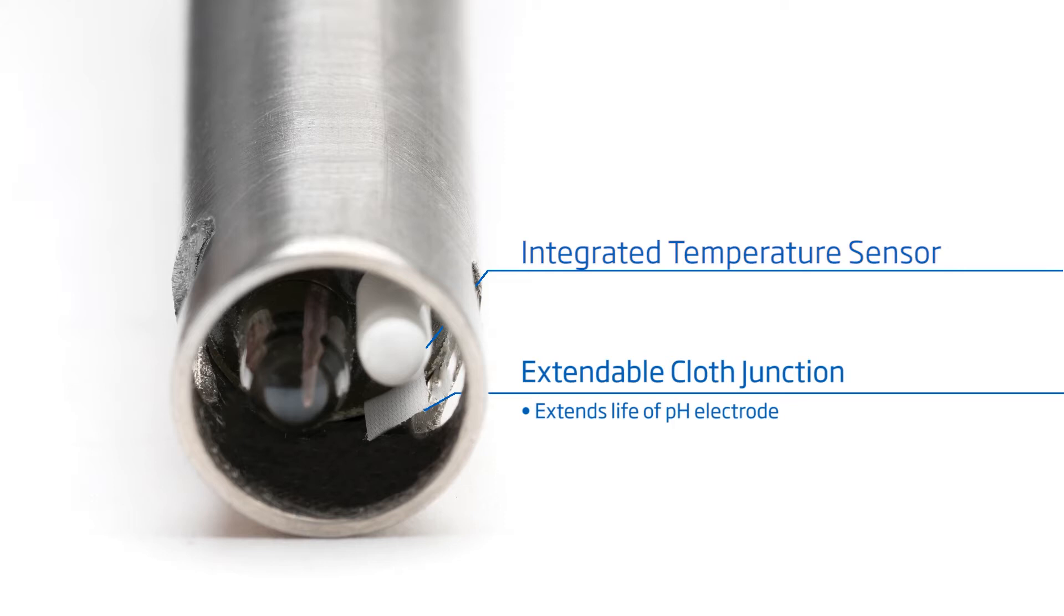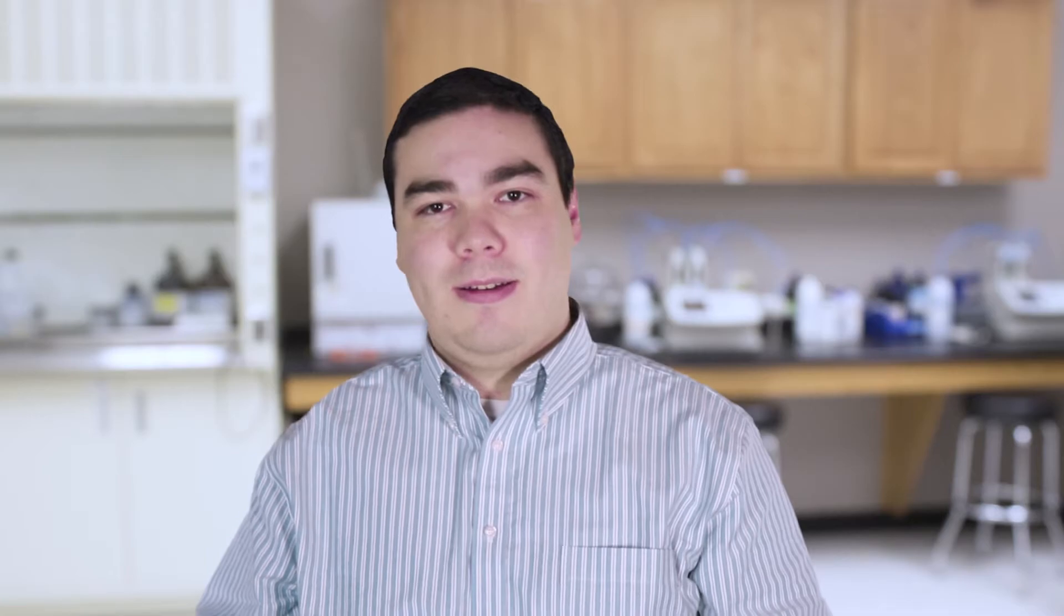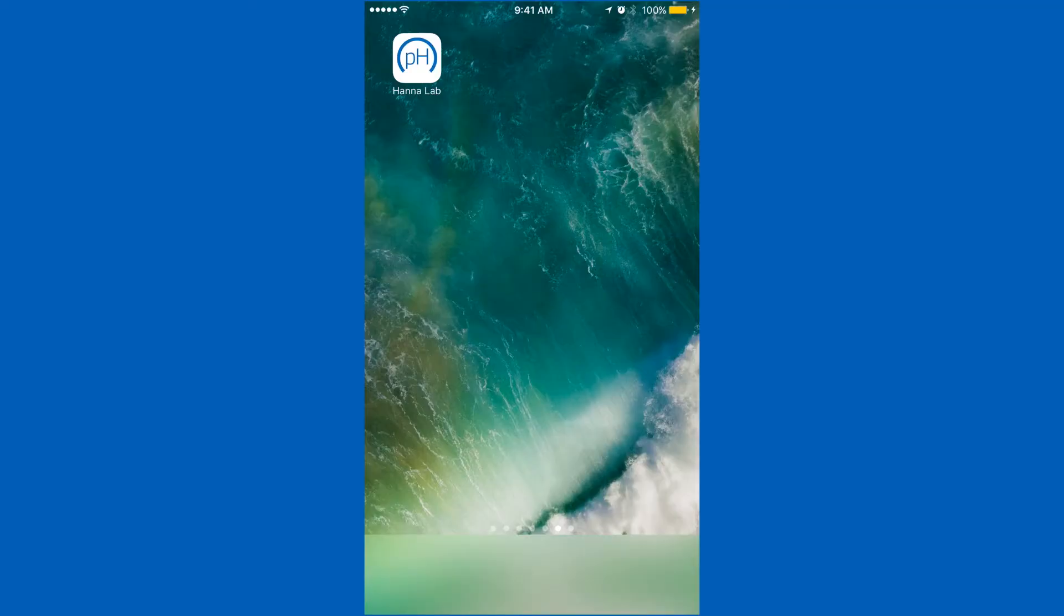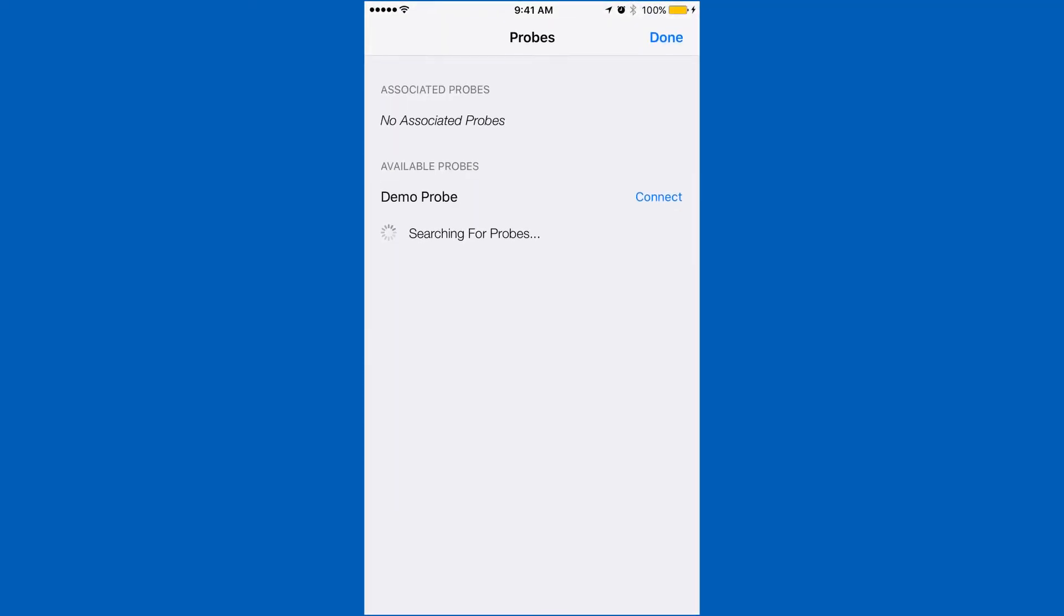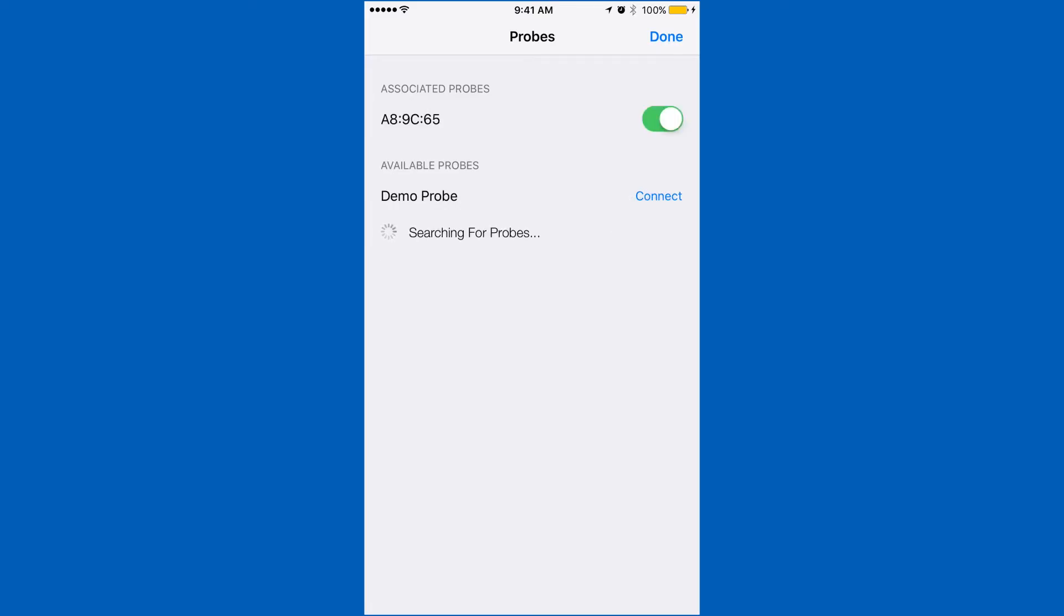The FC2142 is ideal for measuring the pH of mash or wort during the beer making process. To connect your Halo, be sure Bluetooth is enabled on your device. Open our HANA Lab app and press the Bluetooth symbol. Press the button on your Halo and our app will recognize the electrode. Tap connect and you'll be ready to calibrate.